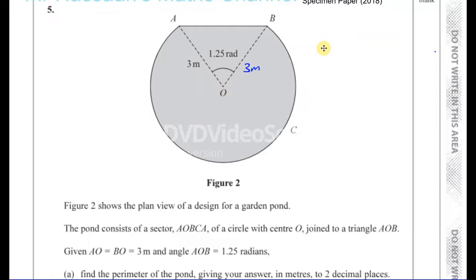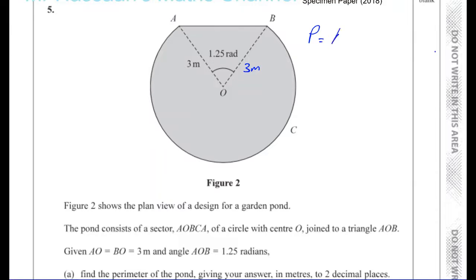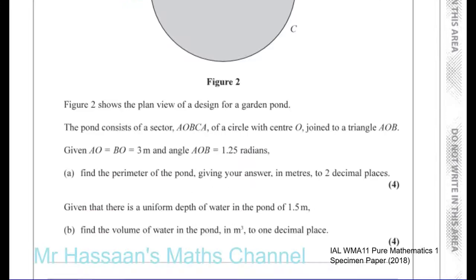The perimeter of the shape is the length of the outline. This outline has a straight line AB, and also the length of the major arc going all the way around from A the long way around to B. So we have two things: a triangle and the arc of the sector.